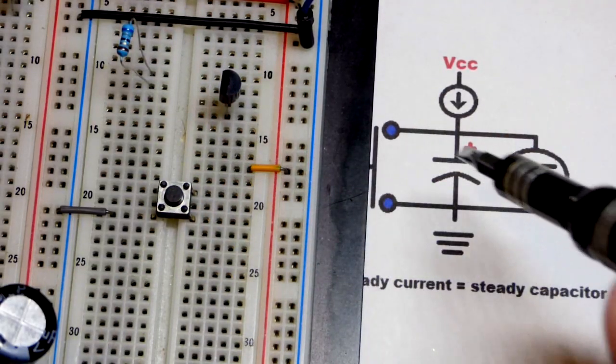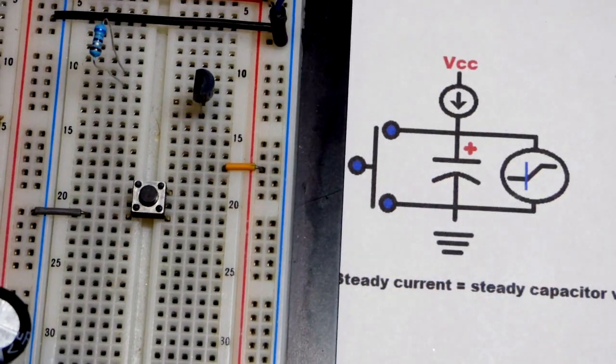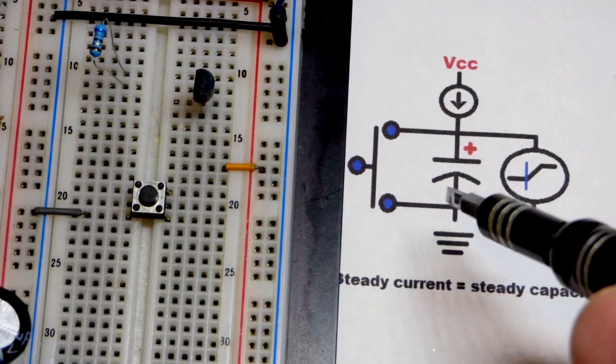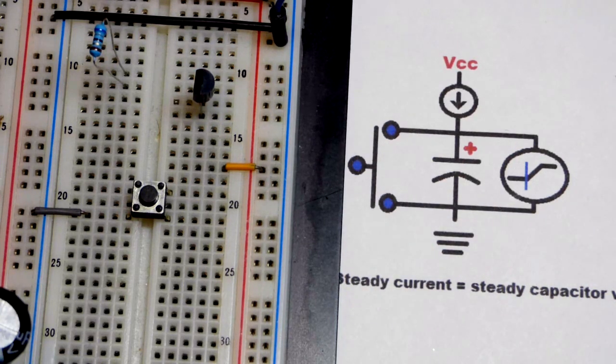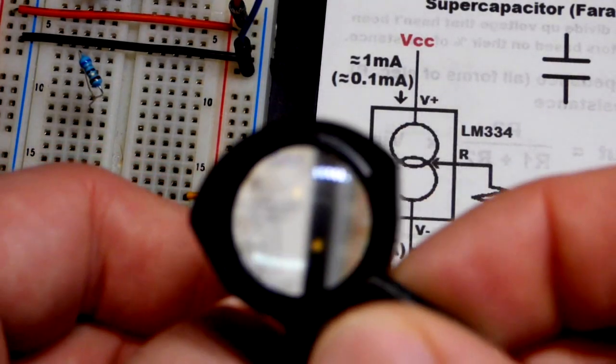The switch is intended to discharge the capacitor instantly, so we cannot use way too high of a value of a capacitor or way too high of a voltage because it's a short circuit, but these low capacitance low voltages are just fine. So now to set the current we're going to use a little integrated circuit, kind of looks like a transistor.